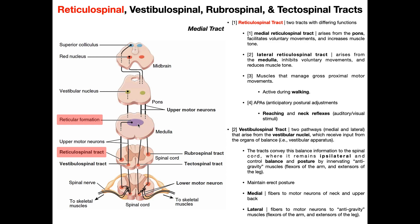Here in the picture we see the reticular formation in the medulla, but the reticular formation actually spans from the pons down through the medulla. The tract originating from the medulla level of the reticular formation is the lateral reticulospinal tract. There would also be, at the level of the pons, a reticular formation origin, and the medial reticulospinal tract comes from that. They both run together, coming down from the brain stem into the spinal cord, and eventually go out to skeletal muscles.